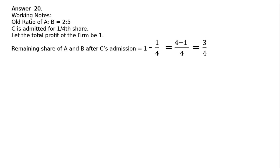Remaining share of A and B after C's admission is equal to 1 minus 1 upon 4 is equal to 4 minus 1, that is 3 by 4. Three-fourths is remaining for A and B to be shared.